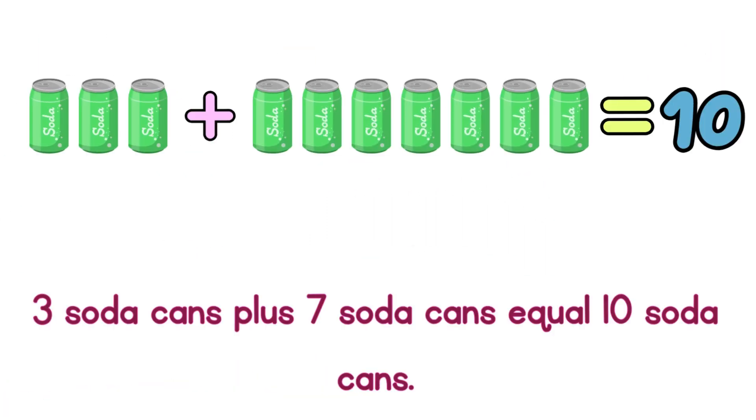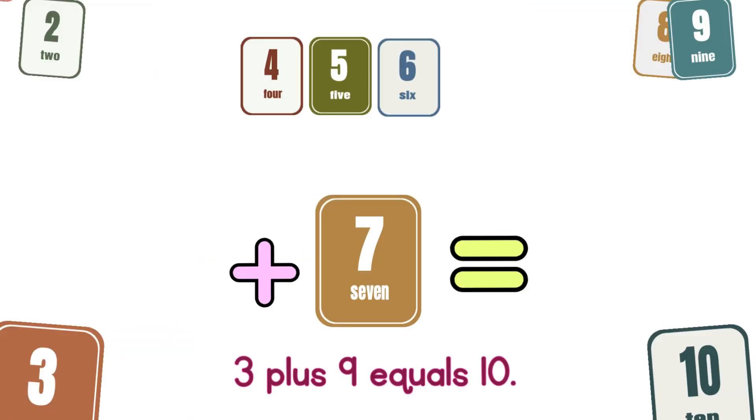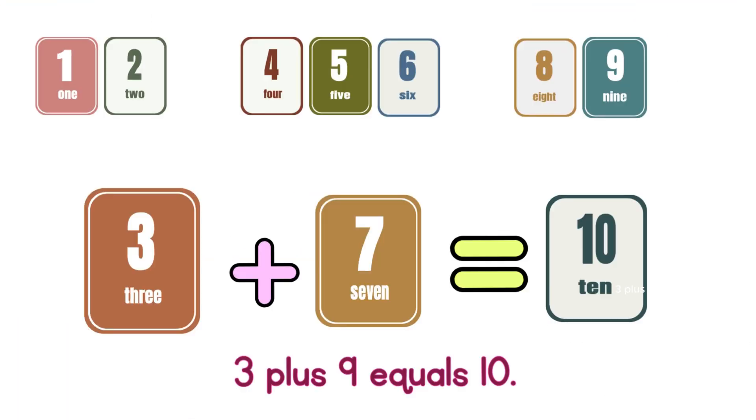3 soda cans plus 7 soda cans equals 10 soda cans. 3 plus 7 equals 10.